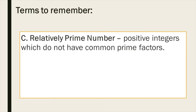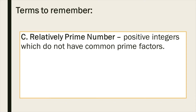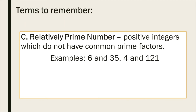For the last part, we have relatively prime numbers. These are positive integers which do not have common prime factors. Examples are 6 and 35, and 4 and 121. For 6 and 35: the factors of 6 are 1, 2, 3, and 6, because 1×6=6 and 2×3=6. However, when we look at 35, the factors are 1, 5, 7, and 35. If you observe the factors of 6 and 35, there are no common prime factors for both of them. So that is the same with 4 and 121.